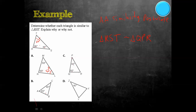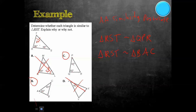Looking at the next triangle, we have 60 and 40, and RST also has 60 and 40, so those are similar. Triangle RST is similar to triangle BAC — going in order 80, 60, 40 matching 80, 60, 40. For the last triangle, we only have one angle given — 40 degrees — so we don't know the other two angles and cannot say it is similar. So triangles B and C were similar to triangle RST.